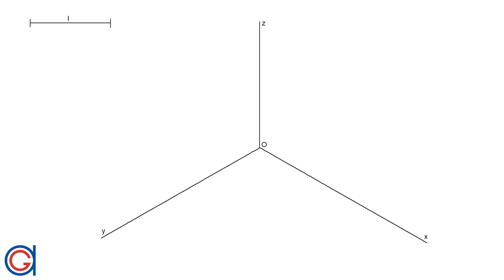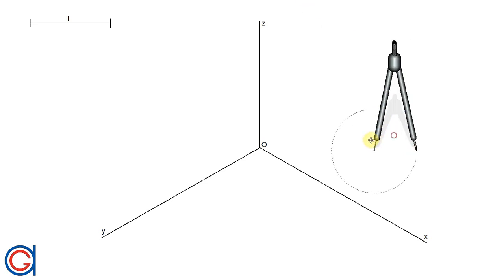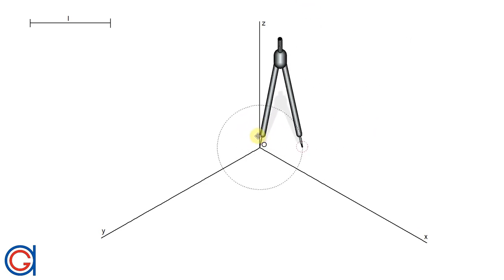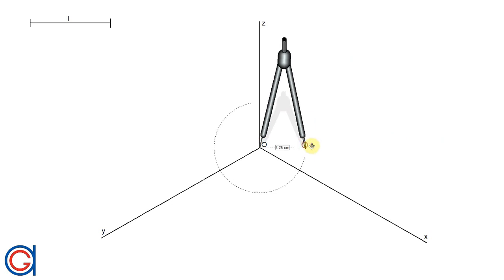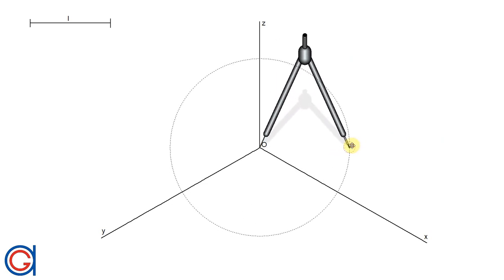The length L can be any measurement that you choose. We are going to start by setting our compass on the origin O and with a radius slightly longer than our given side L, we are going to transport this length onto the three axes as can be seen here.